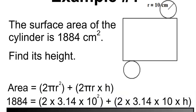The area is 1,884, which equals 2 times 3.14 times 10 squared, plus 2 times 3.14 times 10 times h, which is our unknown.